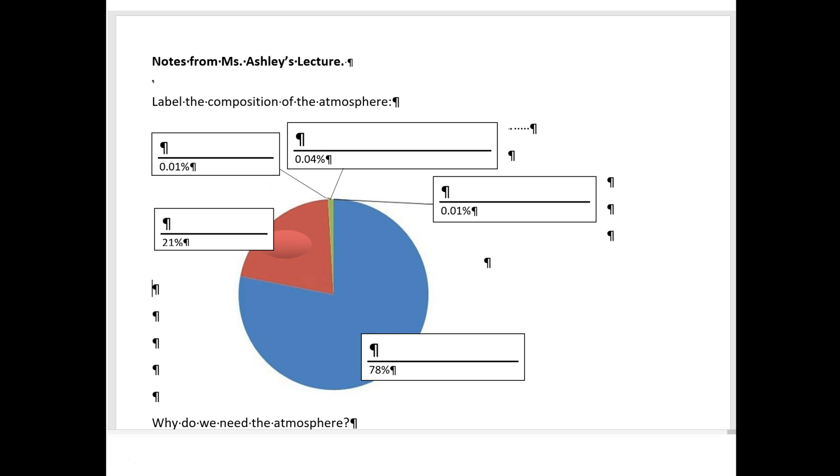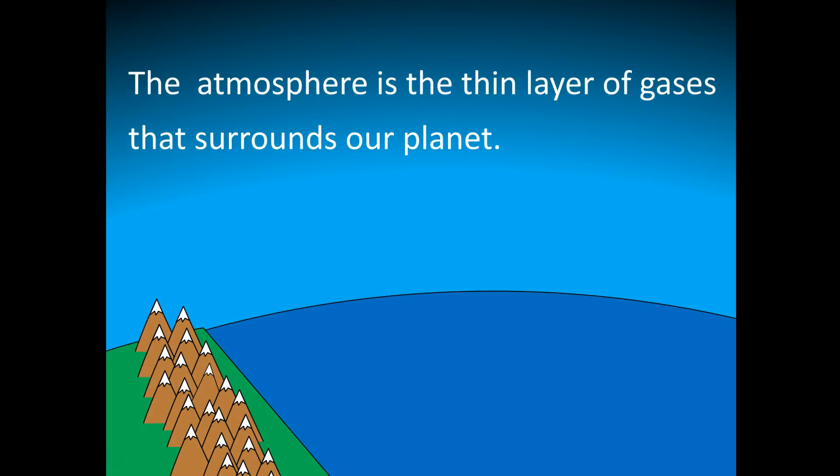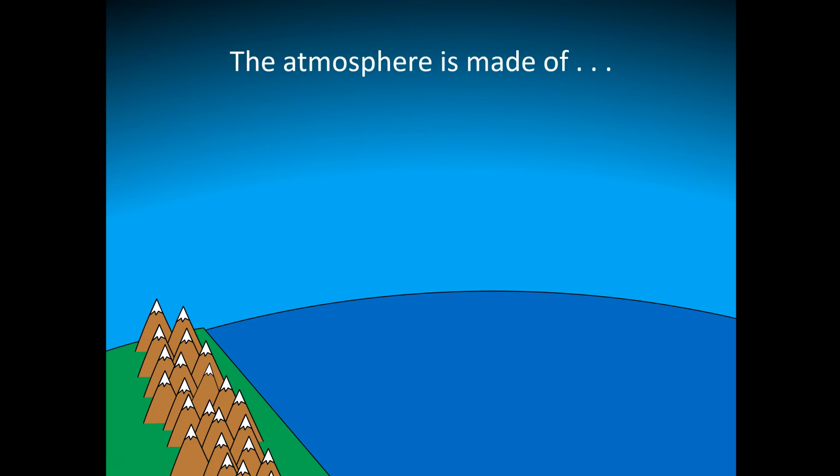As we get started, you can print this note sheet from my website and follow along as we take notes. This is what it looks like. The atmosphere is the thin layer of gases that surrounds our planet.